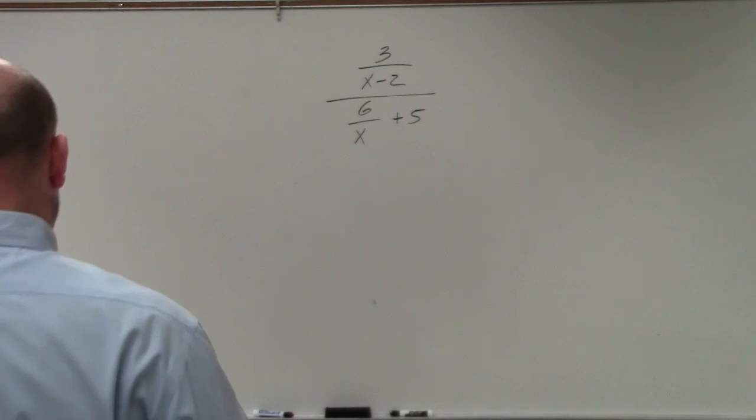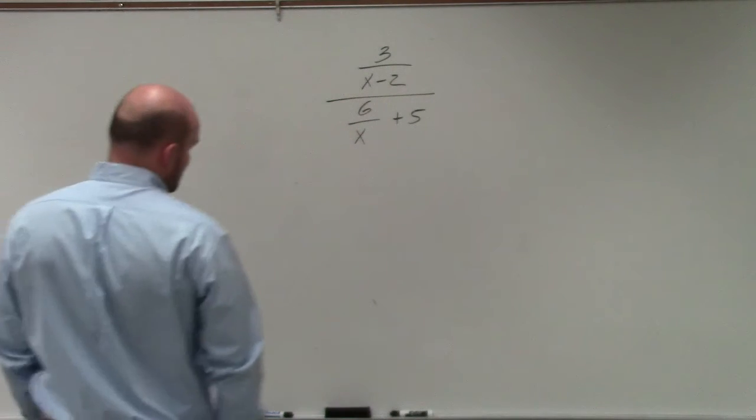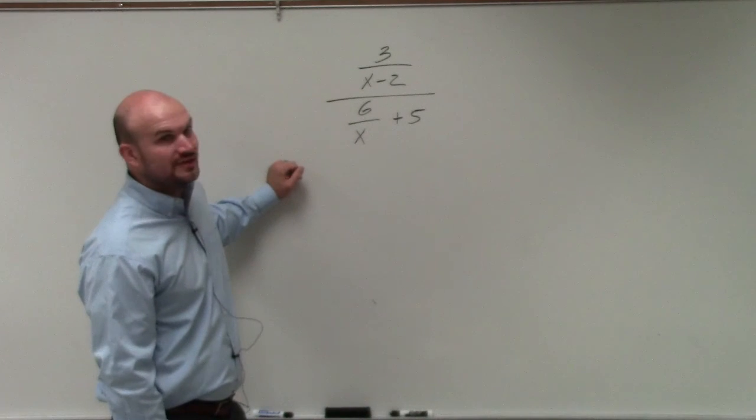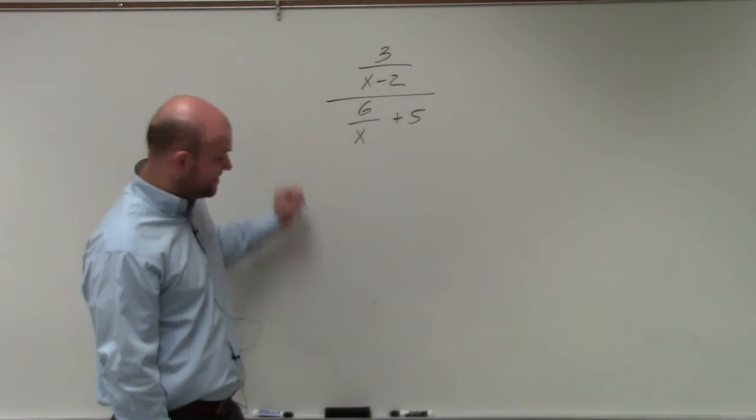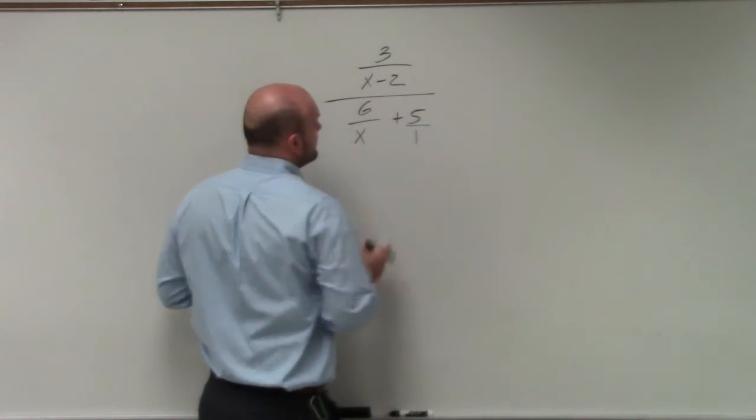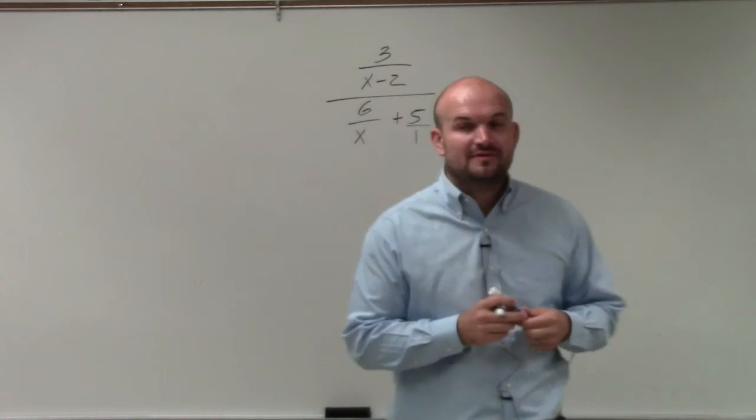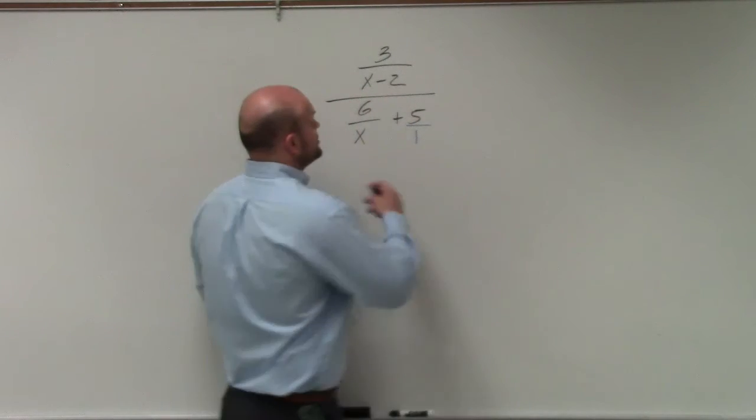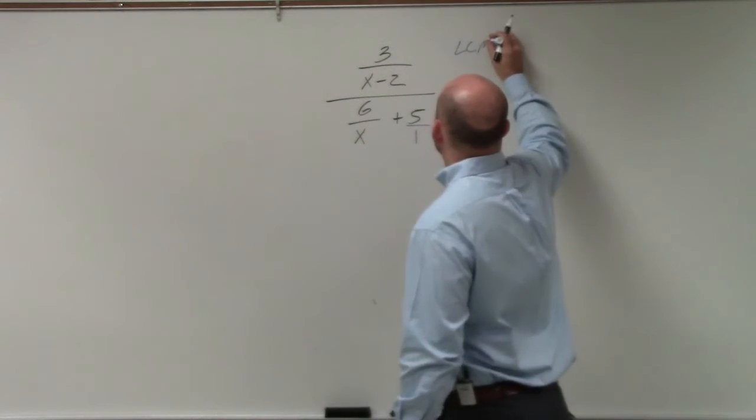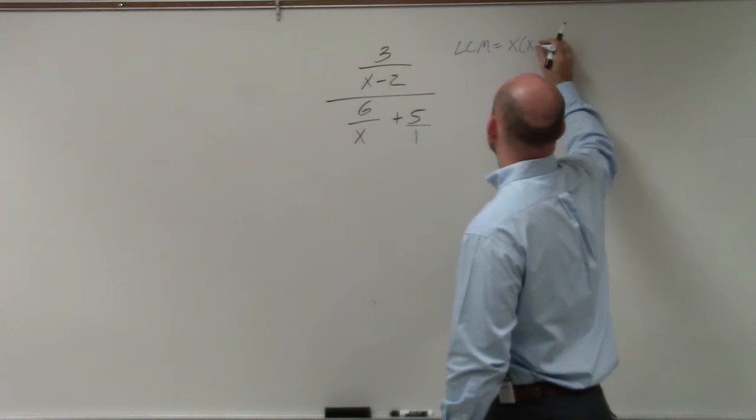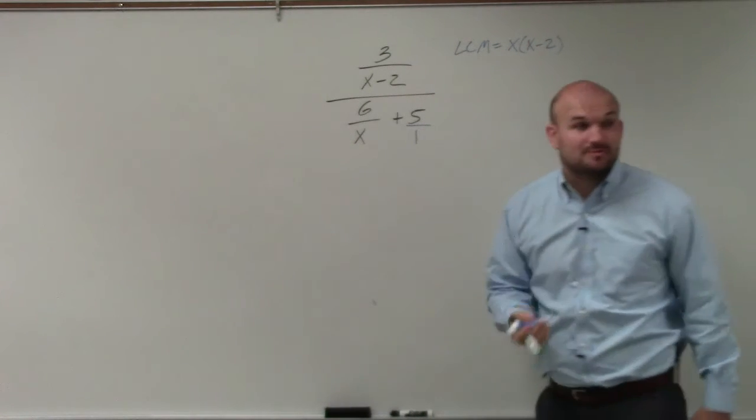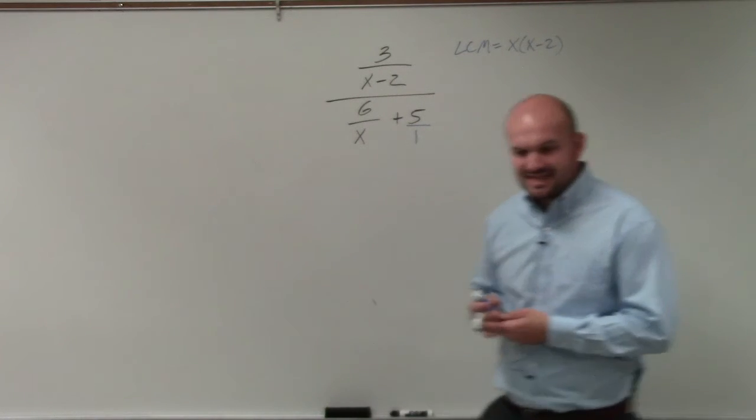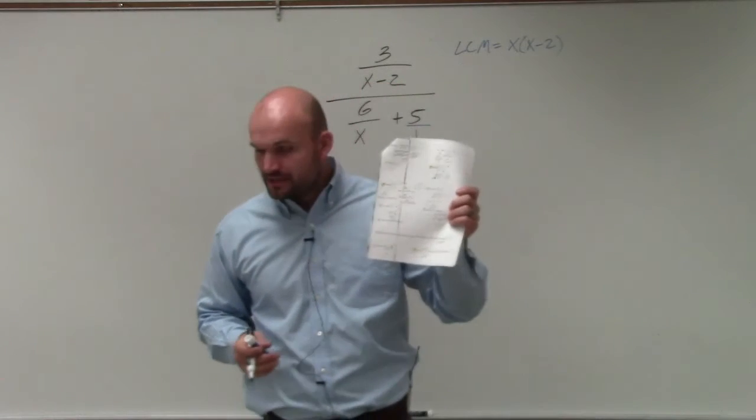So in this example, there's a couple things we can do. We can follow the exact same procedure that I did last time. We can identify, look at all the denominators, and develop a least common multiple of our denominators, which in this case is going to be an expression x times x minus 2. Then I can multiply the numerator and the denominator by x times x minus 2. That's what I did when I showed you guys the solutions up here.